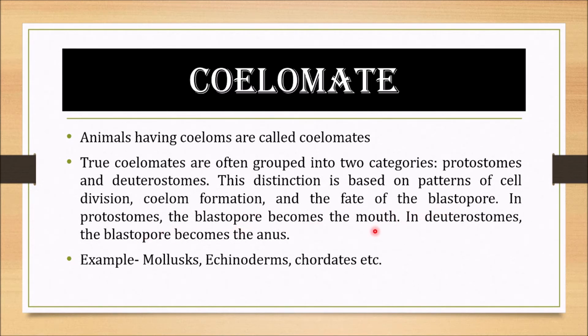In protostomes, the blastopore becomes the mouth. In deuterostomes, the blastopore becomes the anus. Examples of coelomates include mollusks, echinoderms, and chordates — these are all called coelomates.